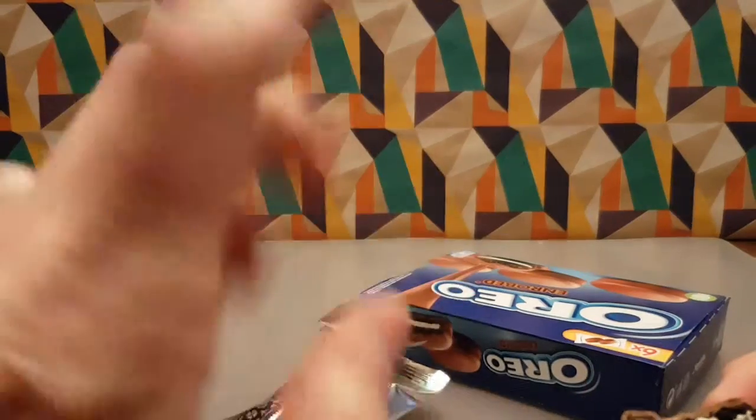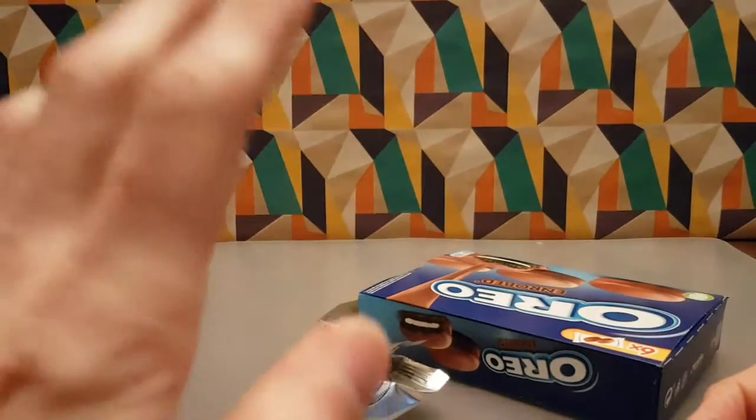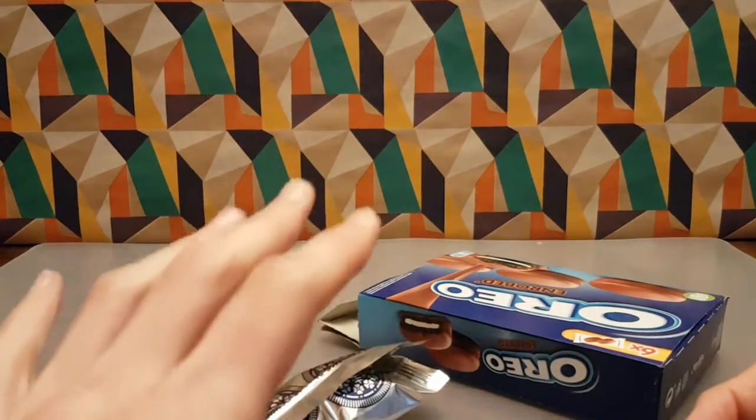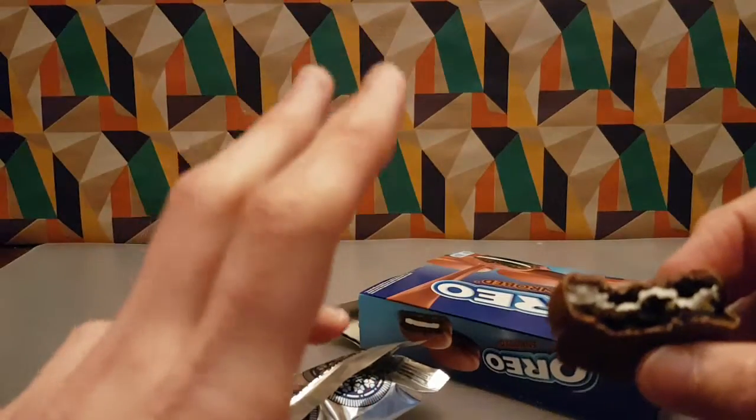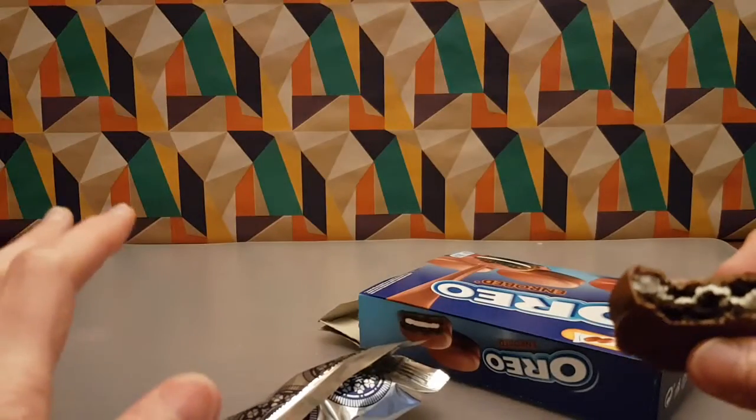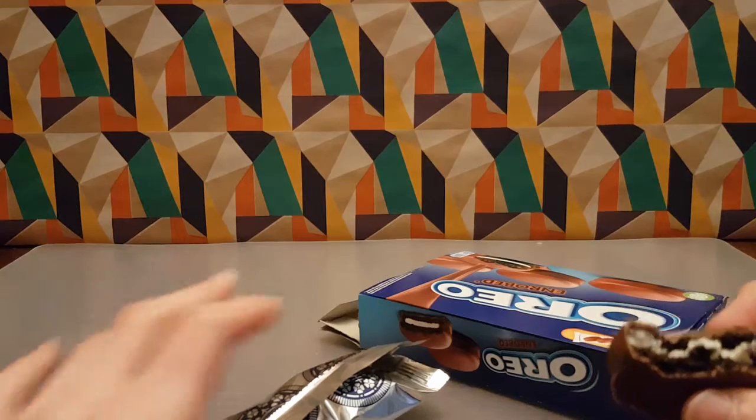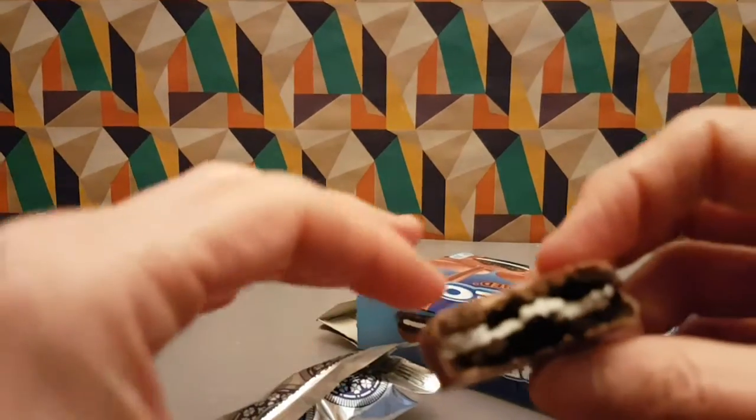The chocolate on the outside is there, it is present, but somehow the Oreo itself is overpowering everything. Obviously it's the star of the show because it is the Oreo in the name.